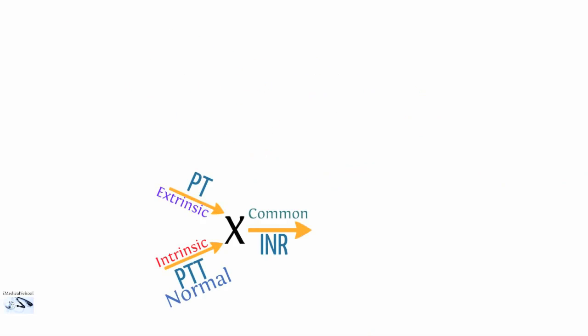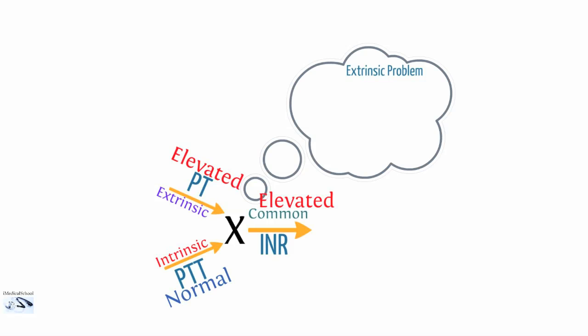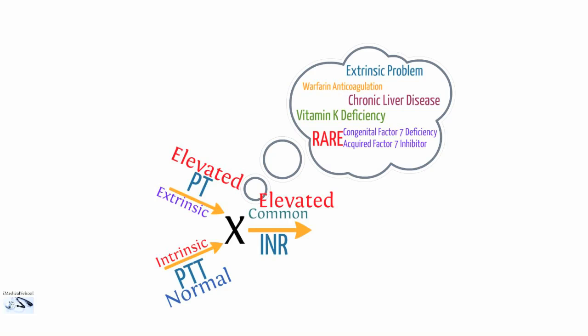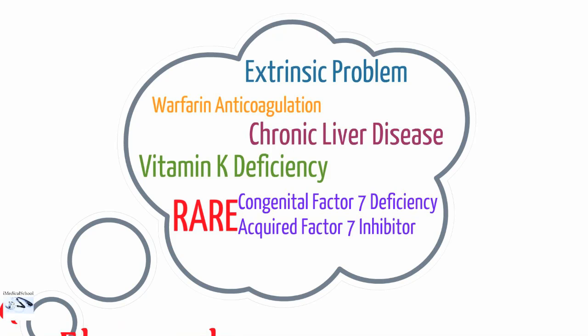In our next scenario, we have a normal PTT, an elevated PT, and an elevated INR. This pattern of coags is consistent with an extrinsic pathway problem. Causes include warfarin anticoagulation, chronic liver disease, vitamin K deficiency, and in rare cases a congenital factor VII deficiency or acquired factor VII inhibitor. The factors involved in the extrinsic pathway include factor VII and tissue factor; factor X is also involved in the common pathway. Vitamin K deficiency reduces the supply of factors II, VII, IX, and X because they require vitamin K for production. Coumadin acts as a vitamin K antagonist, preventing utilization of vitamin K for the production of these factors.